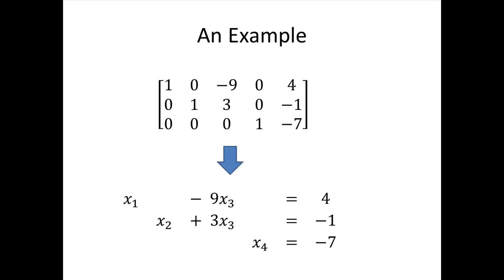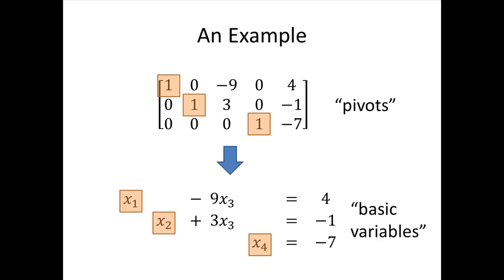Remember that all of those elementary row operations — row swapping, scaling rows, or doing the replacement — represent legal operations we could have done with our equations. So the relationships between the variables have not changed. Anything true about the variables in the original system is still true in the new system. But these equations are much simpler. We've got three pivots in our reduced echelon form. The variables corresponding to those pivots are called basic variables. Since our pivots are in columns 1, 2, and 4, variables x1, x2, and x4 are the basic variables.